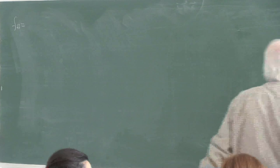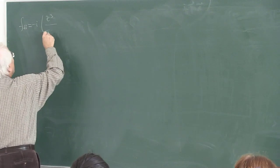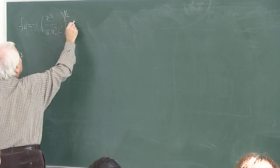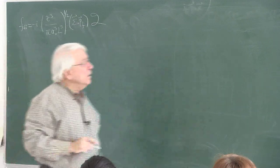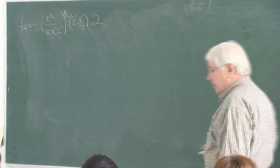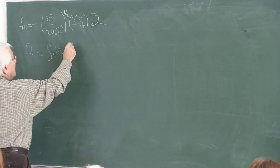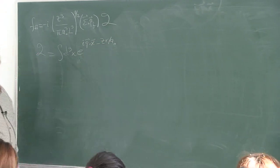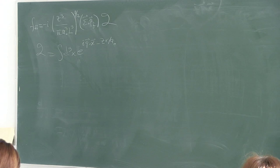So the matrix element f of i is: minus i times Z-cubed over pi to the one-half times Z over a0 to the three-halves times L to the minus three-halves, times epsilon dot pf, times the curly integral I. The integral I is: d-cube-x times e to the i q dot x minus Z r over a0. We now carry out this integral.